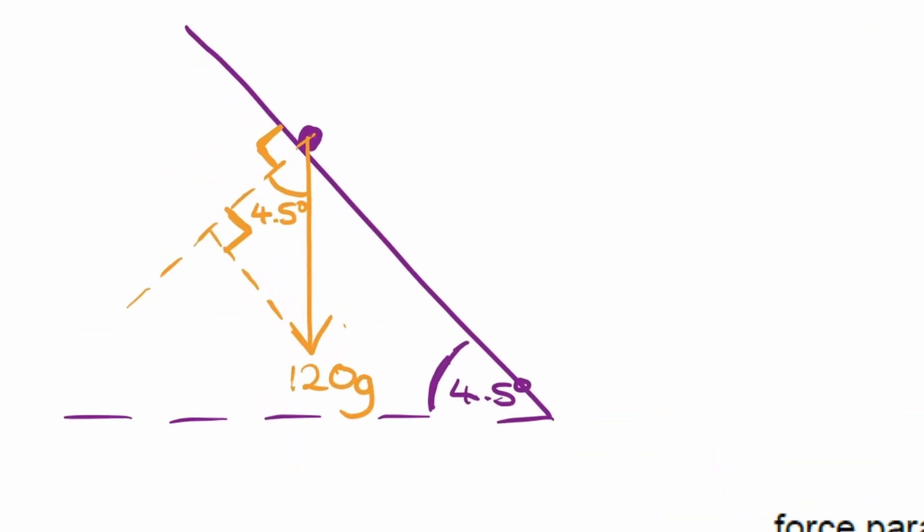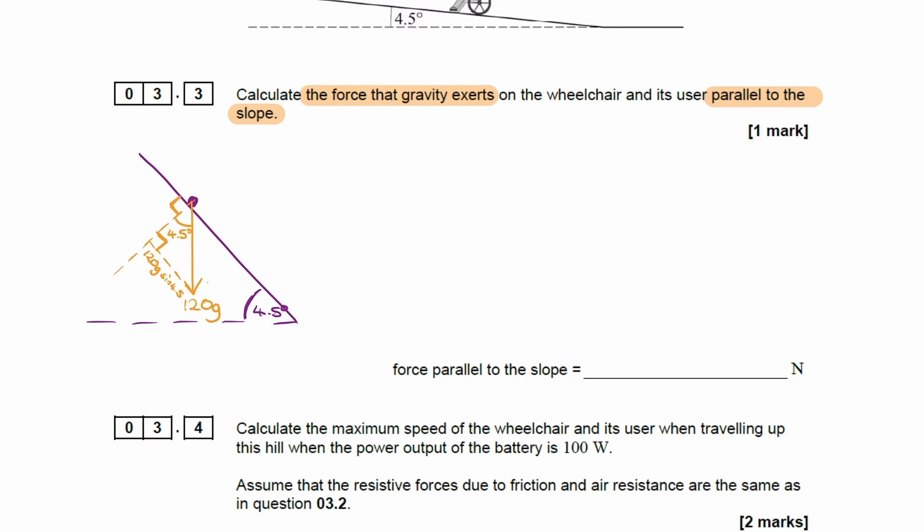I'll write that over here. This is just using SOHCAHTOA. That will be our component parallel to the slope. When we work this out, we get 92.36, so about 93 newtons.